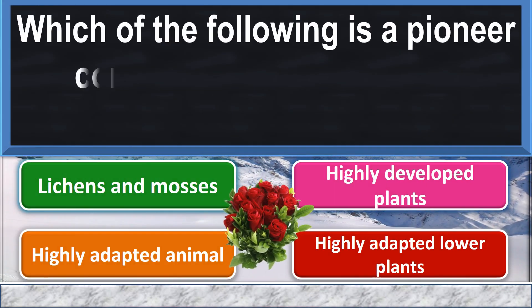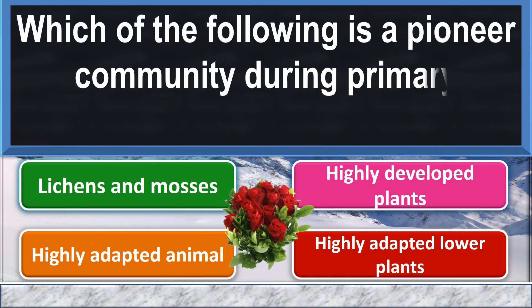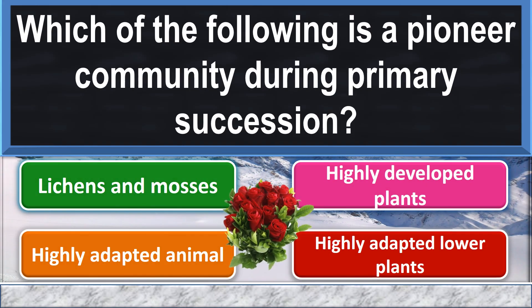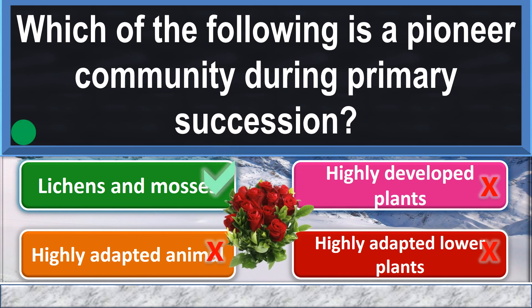Which of the following is a pioneer community during primary succession? Lichens and Mosses.